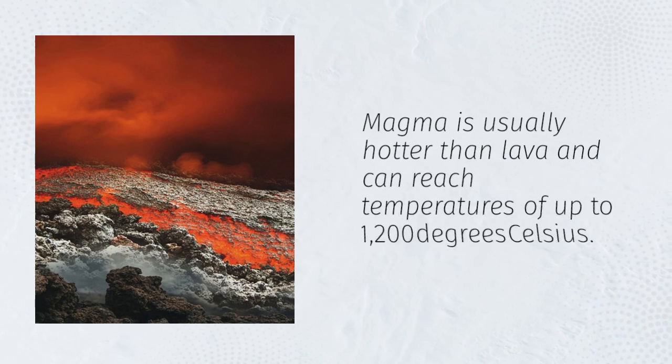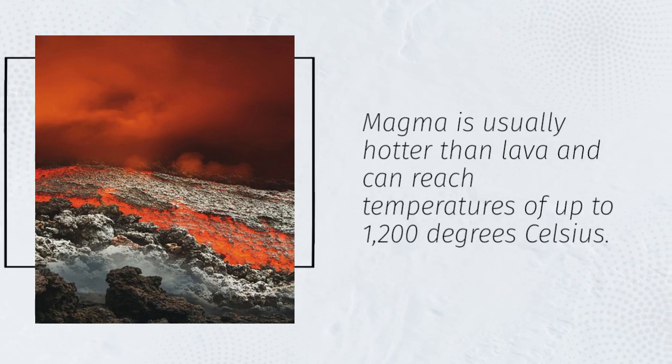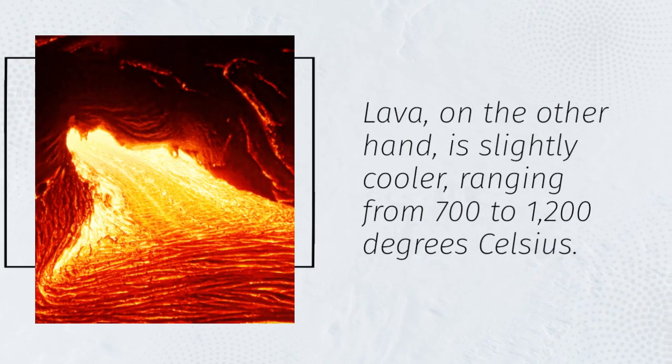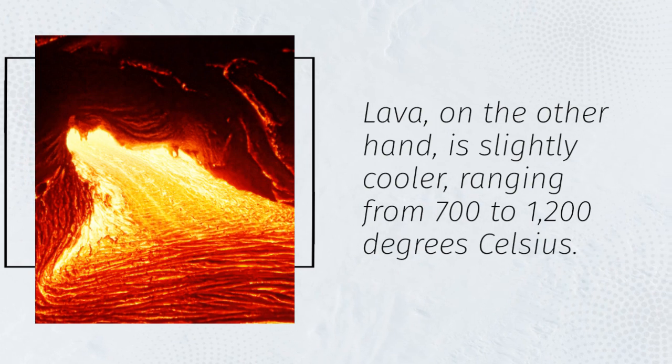Magma is usually hotter than lava and can reach temperatures of up to 1,200 degrees Celsius. Lava, on the other hand, is slightly cooler, ranging from 700 to 1,200 degrees Celsius.